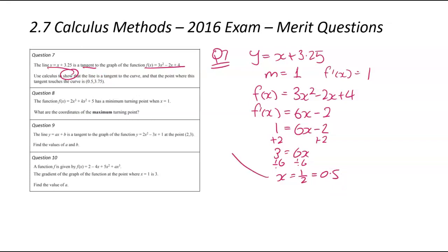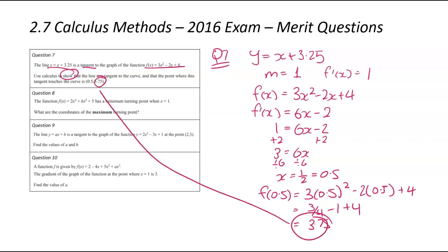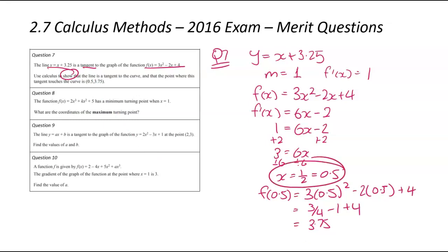We're going to go back to the original equation, not the gradient function, and substitute x equals 0.5 to find y. So we have 3 times 0.5 squared minus 2 times 0.5 plus 4, which gives 3 quarters minus 1 plus 4. Switching back to fractions: 0.5 squared is one quarter times 3 is three quarters, which equals 3.75. That confirms the y value. So we've shown the x and y values and we've got our answer.